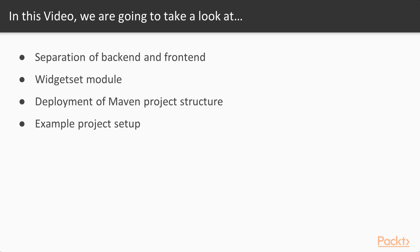We begin this video by looking into how the separation of backend is done from the frontend. Next we will talk about why it makes sense to have certain static parts of the Vaadin UI separated into a separate widget set module. Then we will talk about deployment and how to create one deployable artifact that contains all other modules. Lastly we will create an example project setup through which you can get your own example application foundation running.